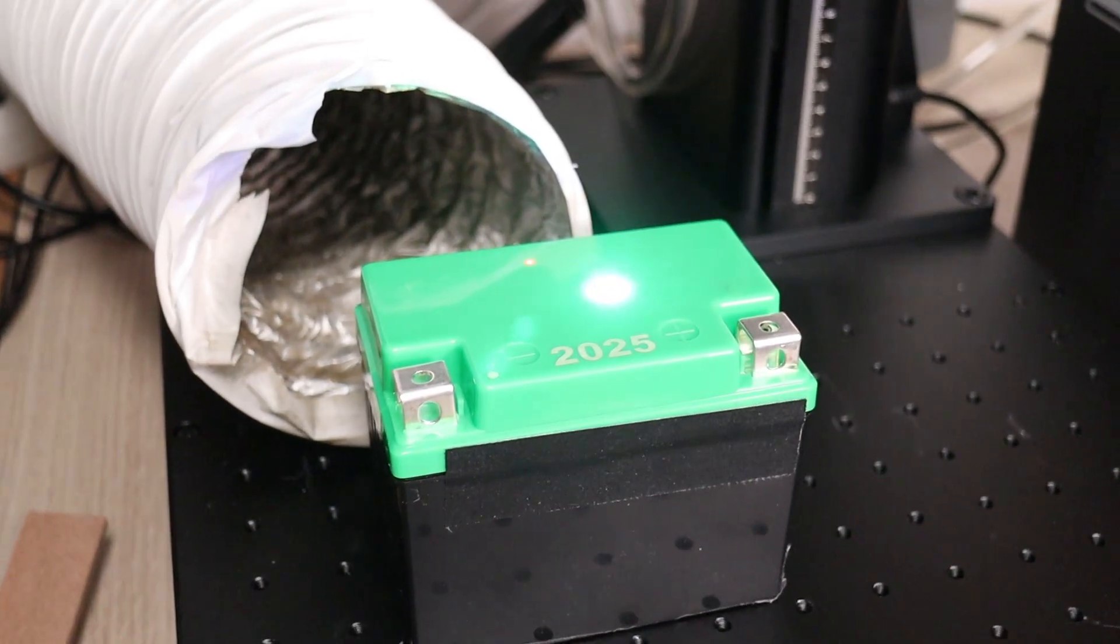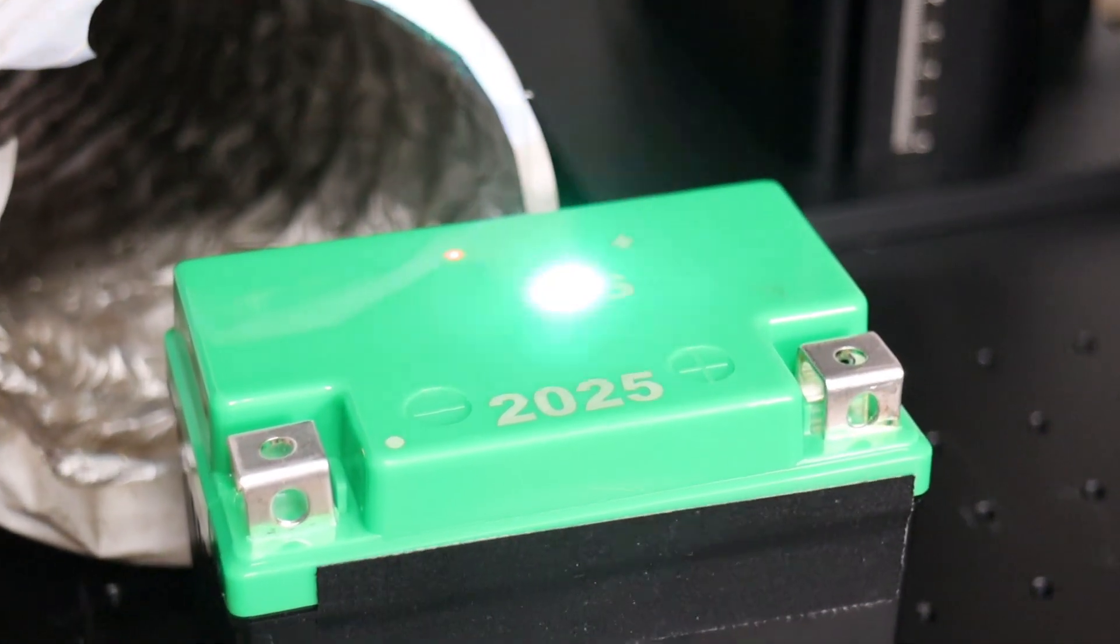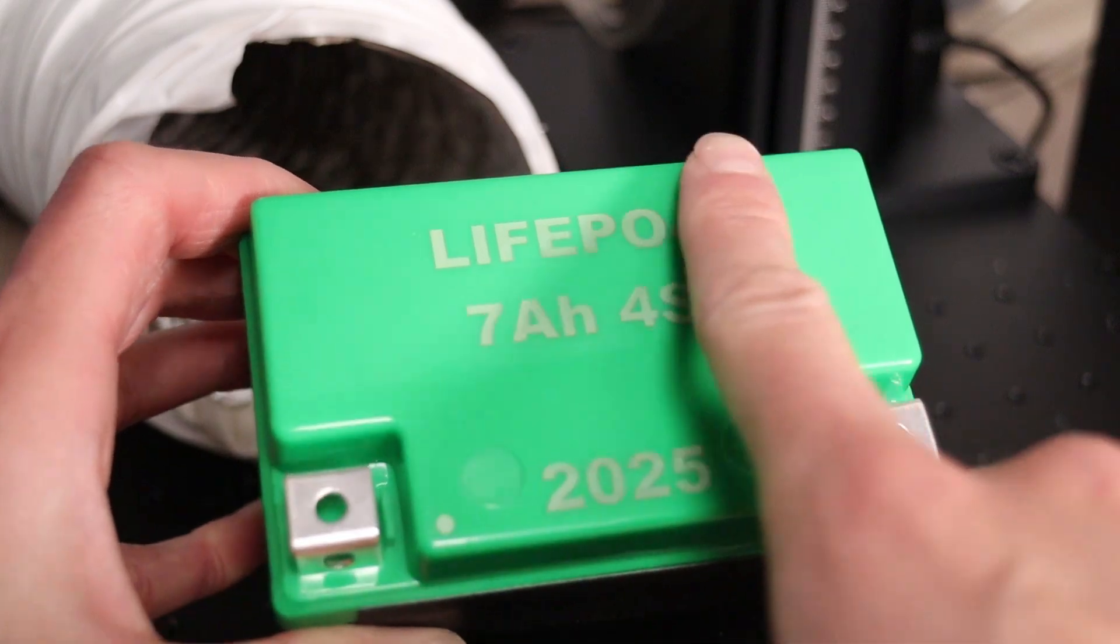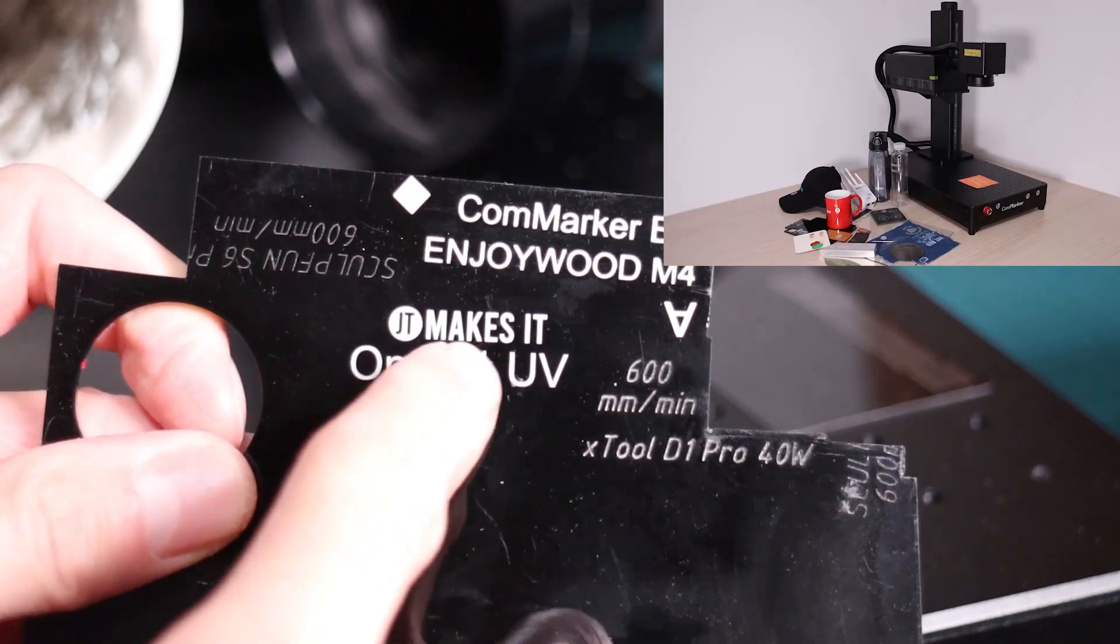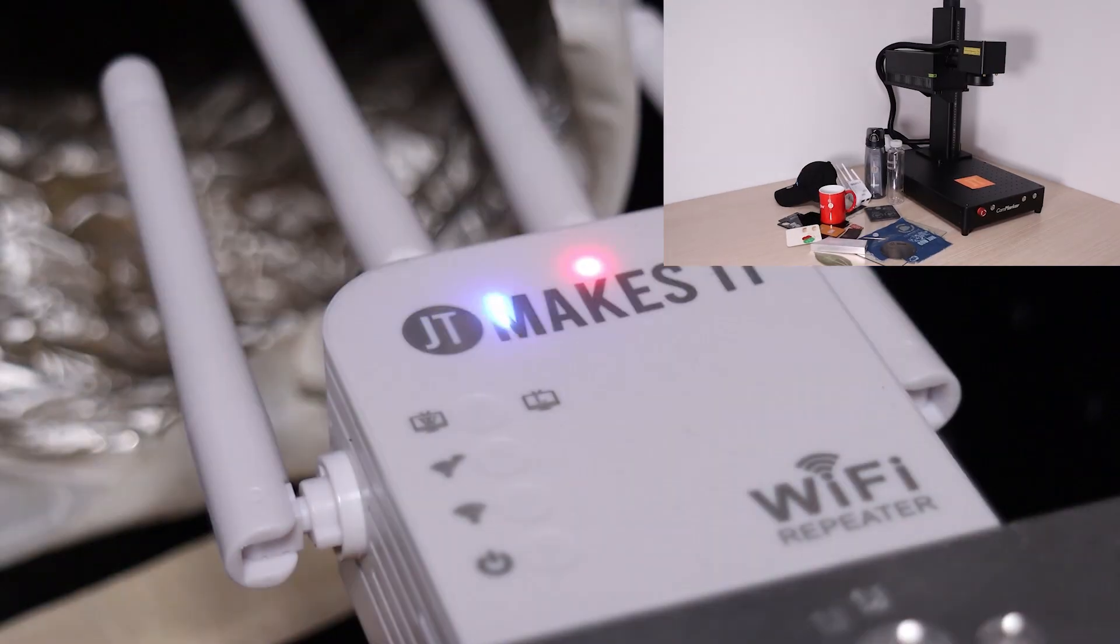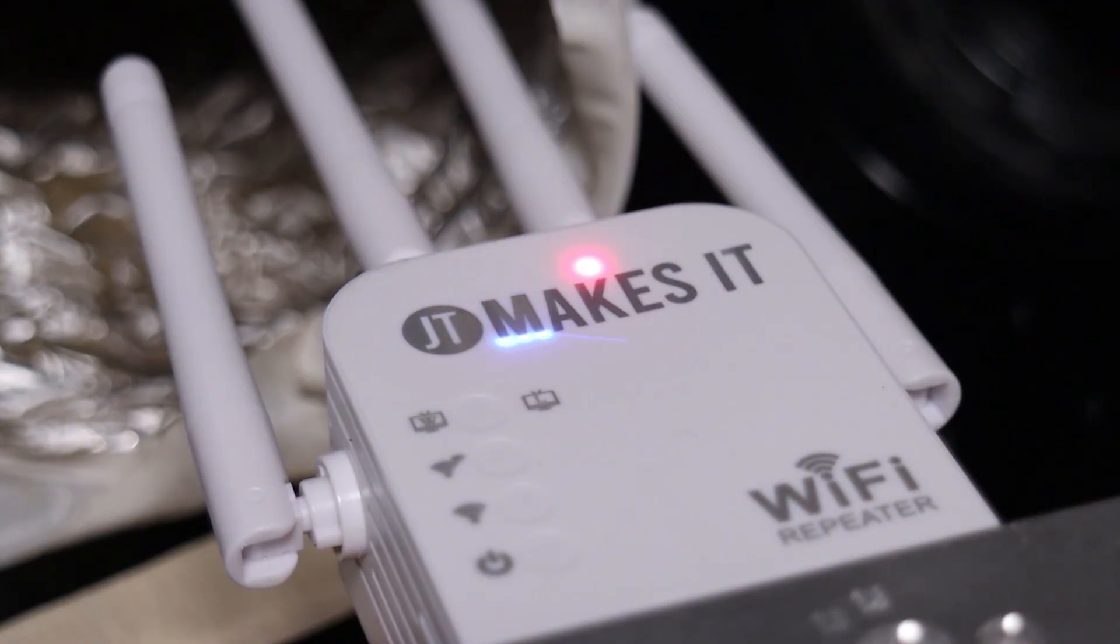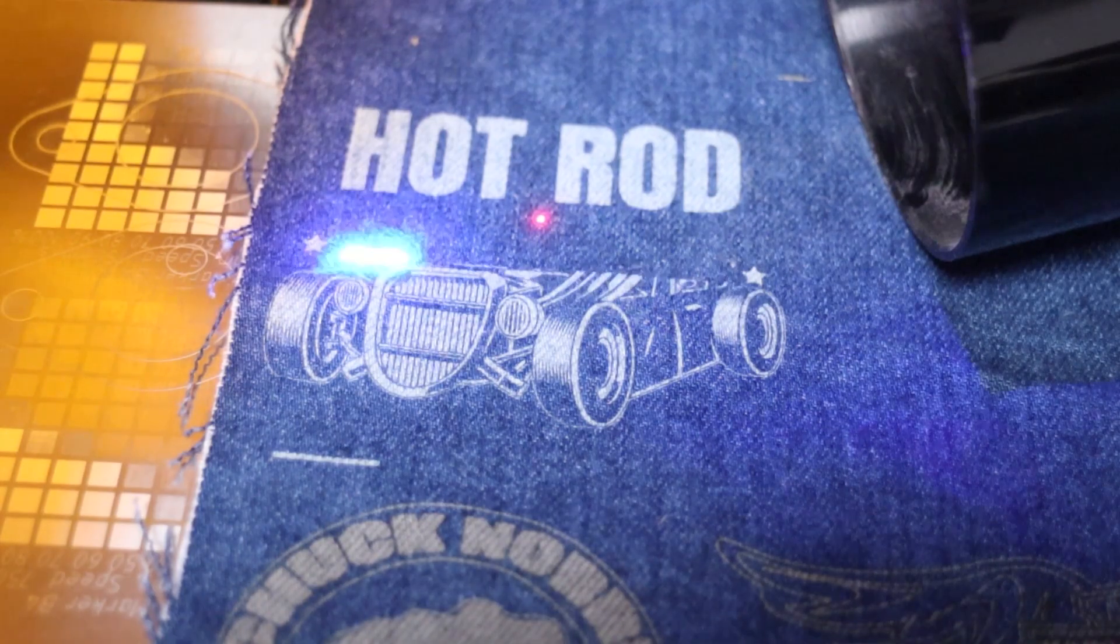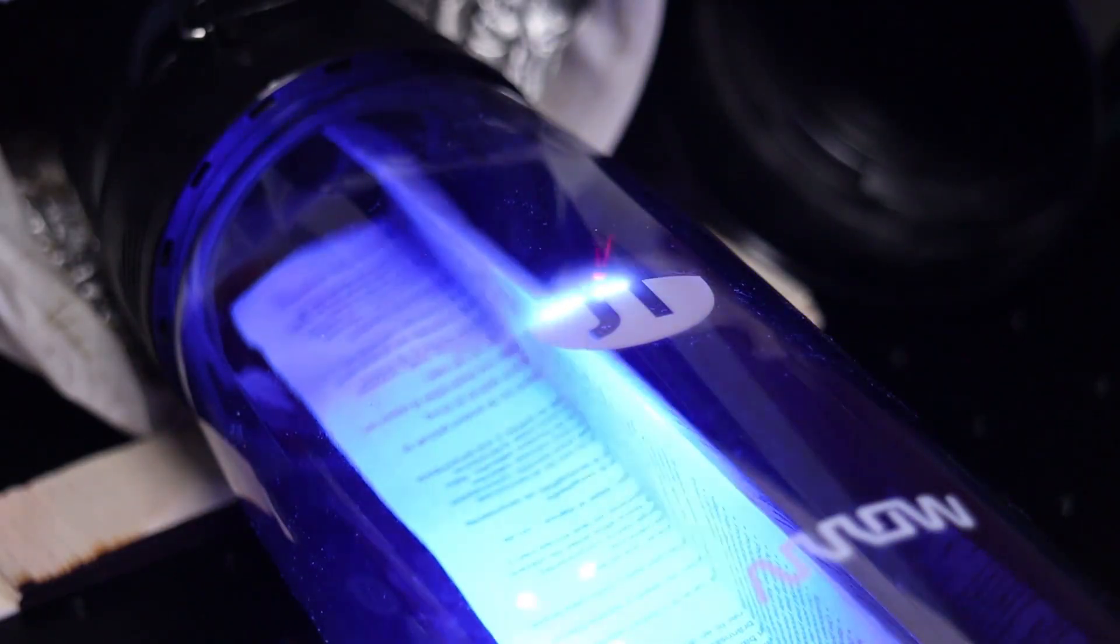Naturally, the 10-watt version also produces excellent engravings on plastic. The plastic is where UV lasers really shine. I highly recommend checking out my review of the 5-watt CommMarker Omni, where I tested many other materials, all of which also apply to this upgraded machine. I will leave a link in the video description.